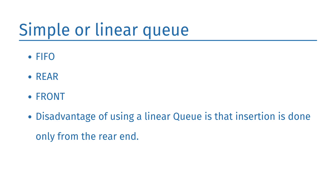The first type is the simple queue or linear queue. It strictly follows the FIFO principle. Insertion takes place from one end while deletion occurs from the other end. The end where insertion takes place is called the rear end, and the end from where deletion takes place is called the front end. The major disadvantage of the linear queue is that insertion is done only from the rear end. If the first elements are deleted from the queue, we cannot insert more elements even though space is available, as the linear queue shows an overflow condition when the rear pointer is pointing to the last element.